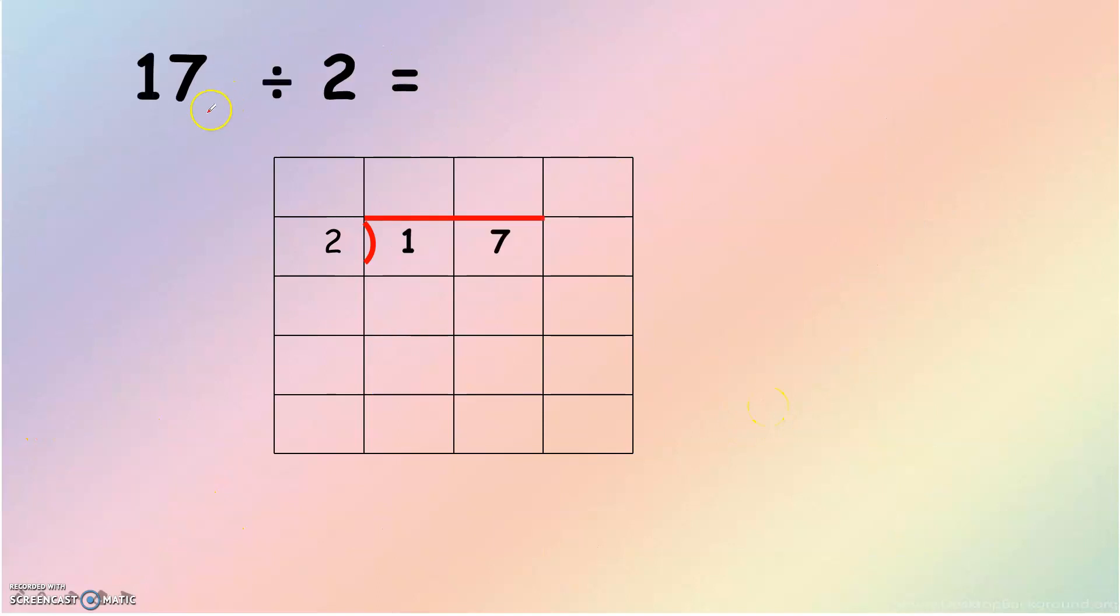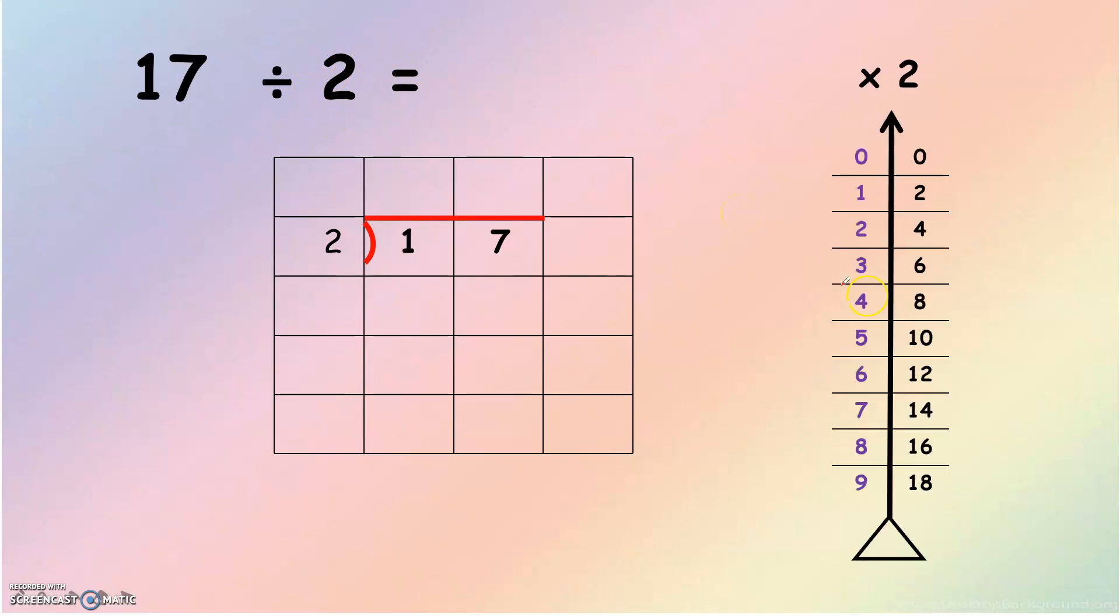Let's look at the second question. 17 divided by 2 equals to. We should write the solution like this: 17 divided by 2. Here we should draw the times 2. And then we should find the 17 here. 17 at here. Where is 17? 0, 2, 6, 4, 6, 8, 10, 12, 14, 16, 18. There is no 17.